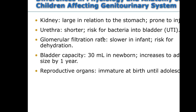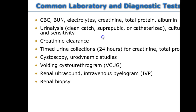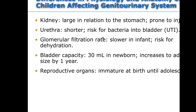Some differences in the physiology and anatomy of kids: one of the big things is their urethra is still very short, which puts them at increased risk for UTIs. Bladder capacity — a newborn has a bladder capacity of one ounce, and it increases to adult size by one year, which is remarkable.